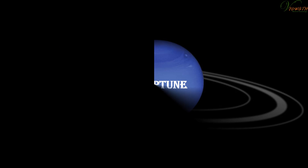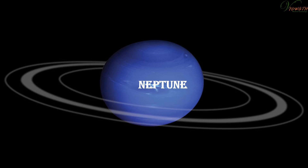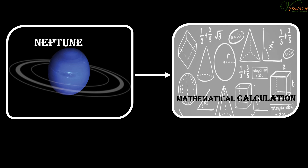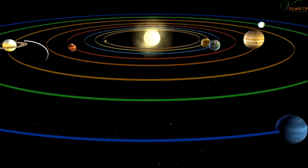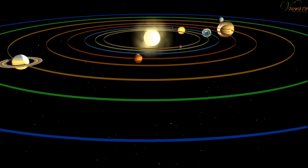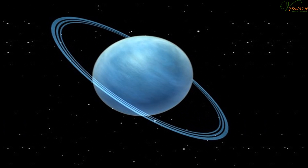Neptune was discovered through mathematical calculations. It has two known satellites and a ring system.